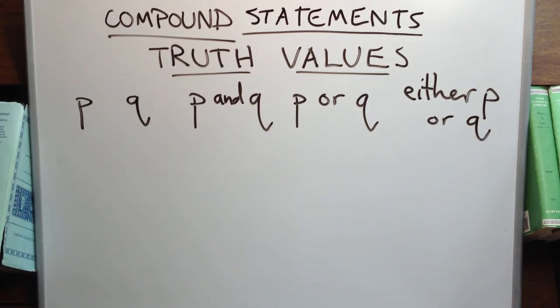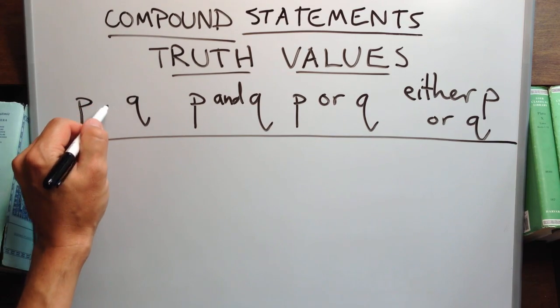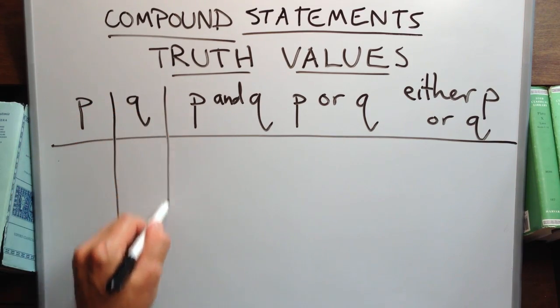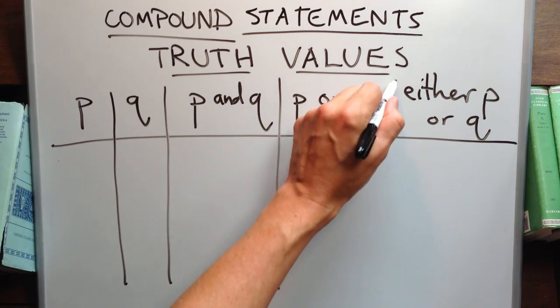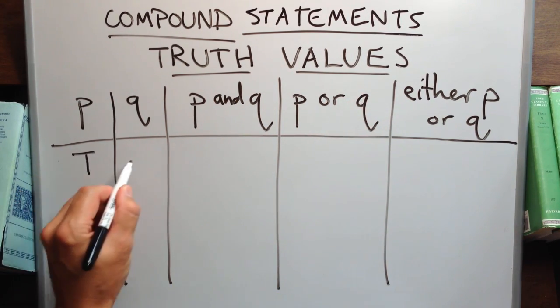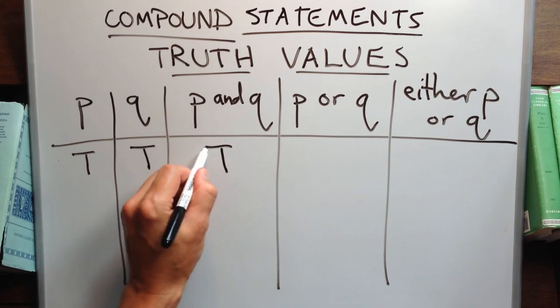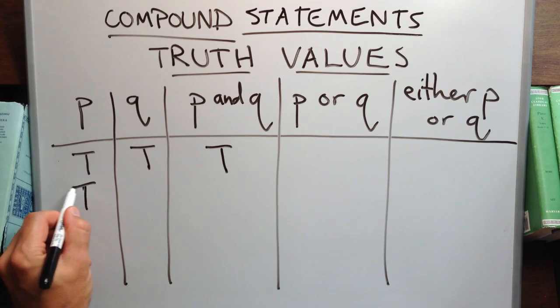P stands for Amy singing, Q stands for Ted's dancing. If someone were to say, Amy is singing and Ted is dancing, in other words, if they were to assert the conjunction, then what would make that claim true? Well, Amy would have to be singing and Ted would have to be dancing. Then the conjunction would be true.